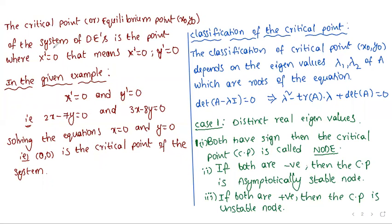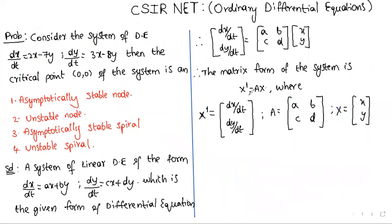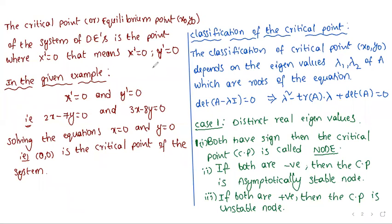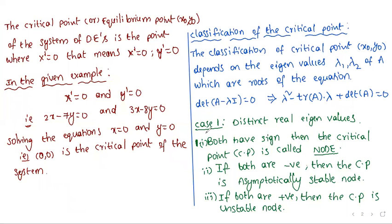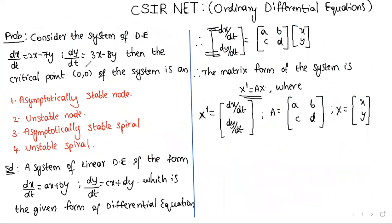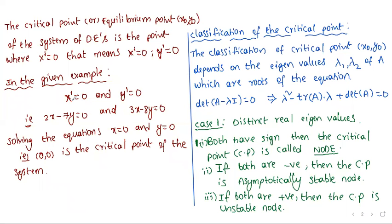Now we first define the critical point. The critical point or equilibrium point of the system x' = Ax is the point where x' = 0 — that means dx/dt = 0 and dy/dt = 0. In the given example, already given x' = 0 and y' = 0, so that is (0, 0).